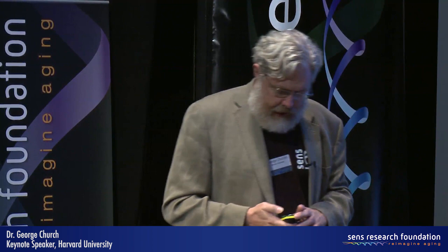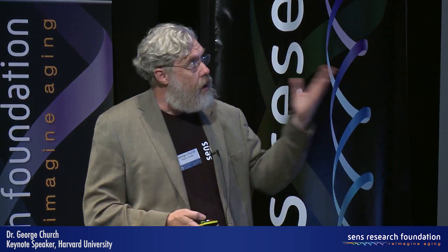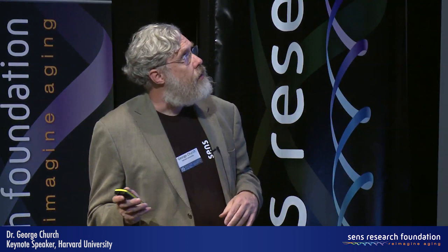Here are examples of teratomas from the PGP stem cell lines, now available from Coriell. In order to get this kind of open sharing, we require 100% exam completion — it just means that people know what they're getting into. They're not necessarily revealing their identity, but with all medical research, we make the claim that data can get out and get re-identified, so we try to educate them in advance.